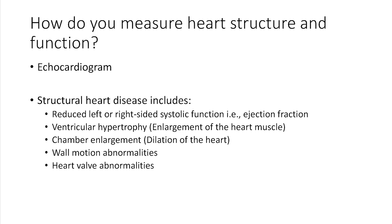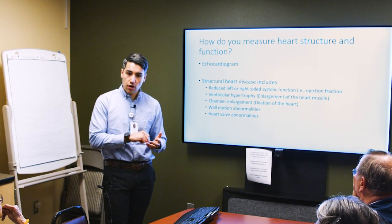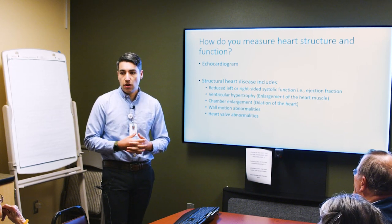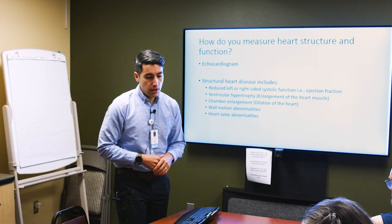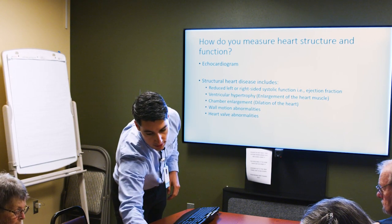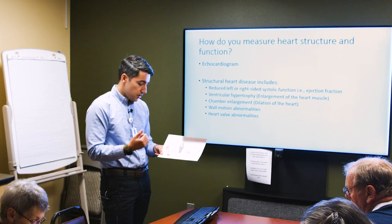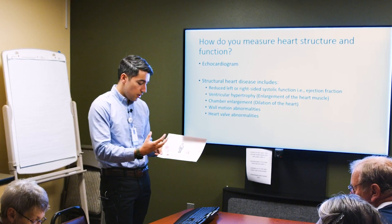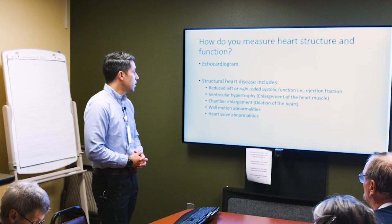We measure the heart's function and structure with an echocardiogram — basically an ultrasound of your heart. We can see what the heart looks like and get an idea of the heart's function. One of the ways we measure function is the ejection fraction. It is a ratio: the denominator is the amount of blood in the heart chamber, and the numerator is the amount of blood pumped out.